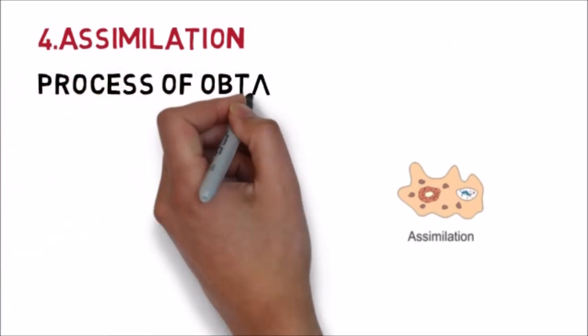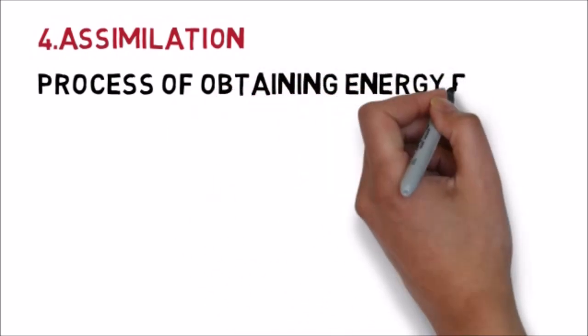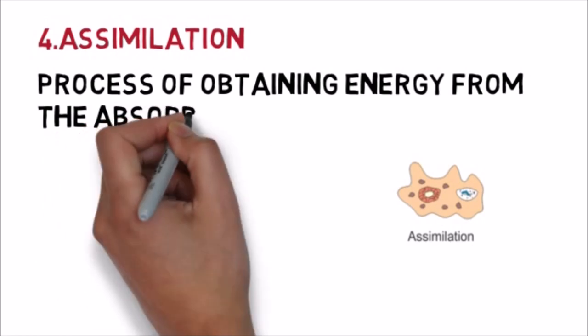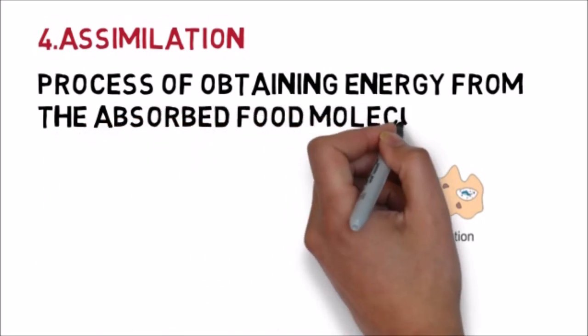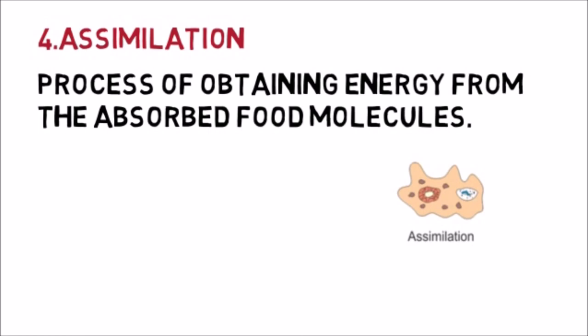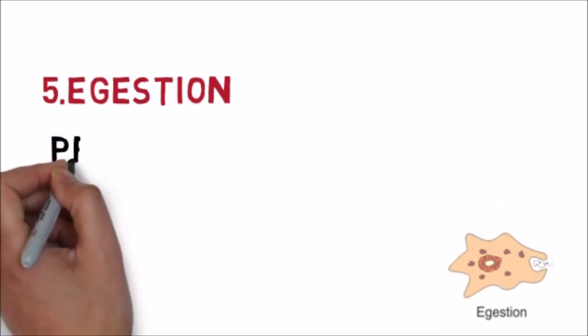After absorption comes assimilation — the process of obtaining energy from the absorbed food molecules. Whatever food molecules have been absorbed, they are used to produce energy to carry out different life processes. This is called assimilation.